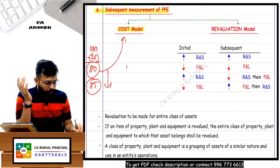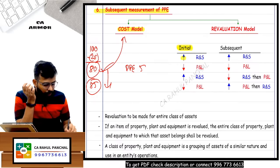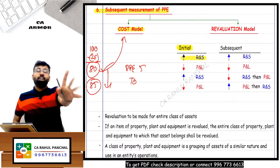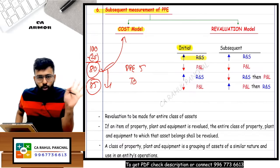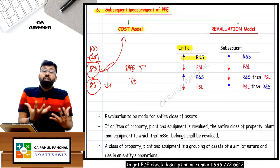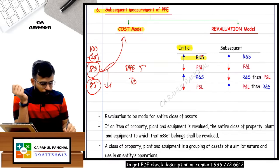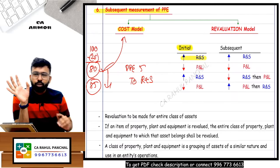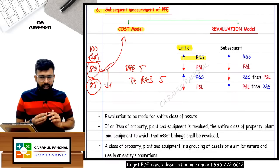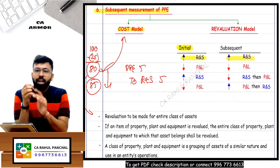When there is upward revaluation - say asset was at 80 and market value is 85 - PPE should be debited. But you cannot credit it to P&L account income, because shareholders would think the company earned this during the year when it is just a revaluation gain. So upward revaluation should be transferred directly to reserves and surplus - not through P&L account.